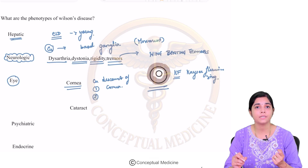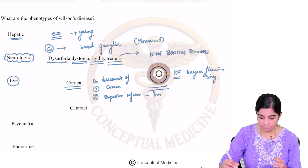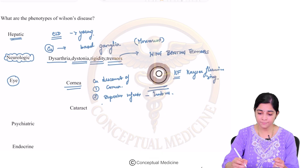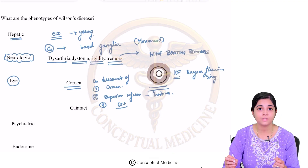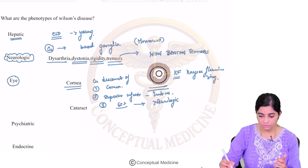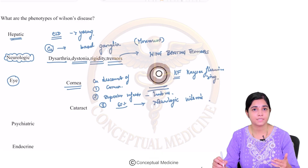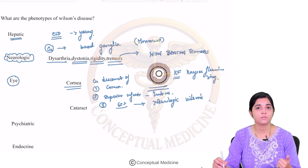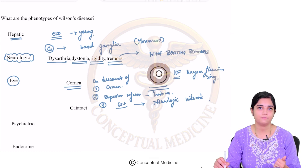When you examine for the KF ring, it commonly begins in the superior and inferior poles in the limbus of the cornea. As for its significance — up to 65% of individuals who have a KF ring, it is associated with neurologic Wilson's disease. If the KF ring is present, there is a higher probability of neurologic Wilson's disease, but it doesn't mean 100% involvement. There are patients who have a KF ring who do not have any neurologic symptoms.